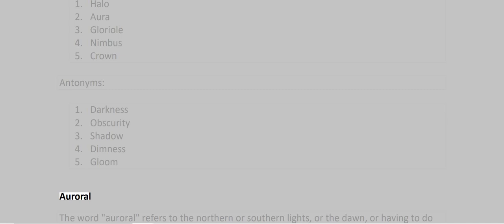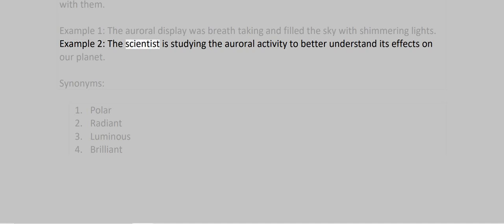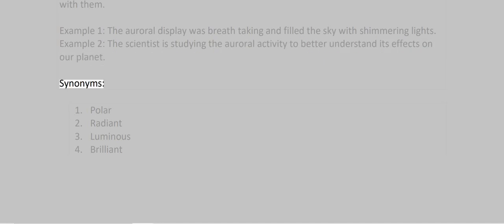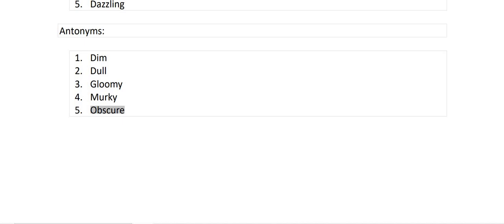Aurora. The word aurora refers to the northern or southern lights, or the dawn, or having to do with them. Example 1: The aurora display was breathtaking and filled the sky with shimmering lights. Example 2: The scientist is studying the aurora activity to better understand its effects on our planet. Synonyms: 1. Polar 2. Radiant 3. Luminous 4. Brilliant 5. Dazzling. Antonyms: 1. Dim 2. Dull 3. Gloomy 4. Murky 5. Obscure.